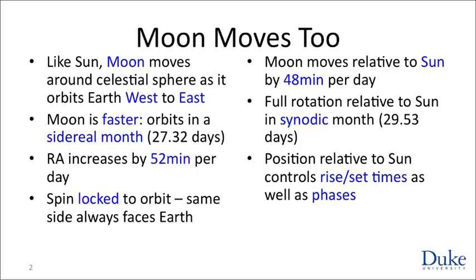In addition to controlling the times that the moon rises and sets, the relative position of sun and moon on the celestial sphere also controls the appearance of the moon — what we call the phases of the moon. The way these two are related is best captured by the following beautiful demonstration.